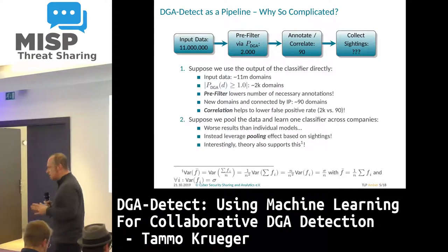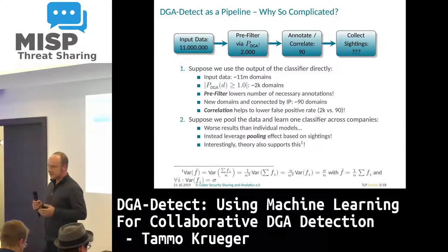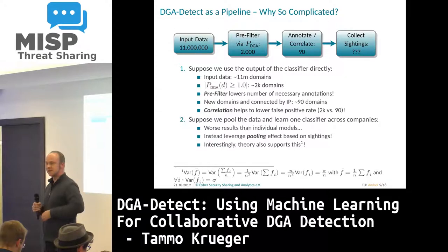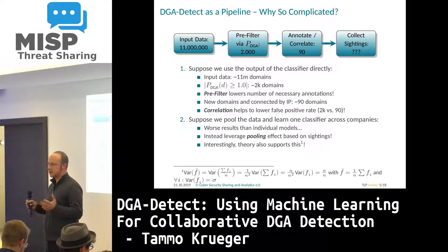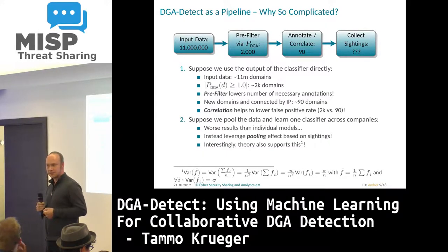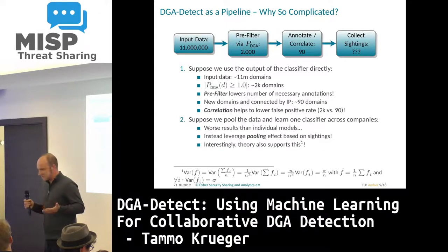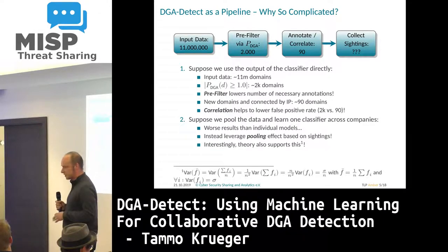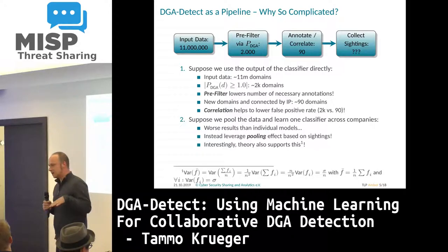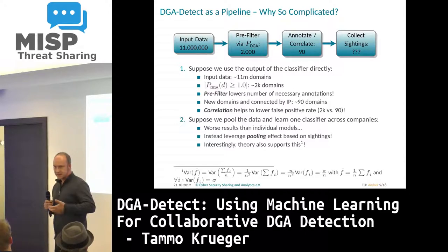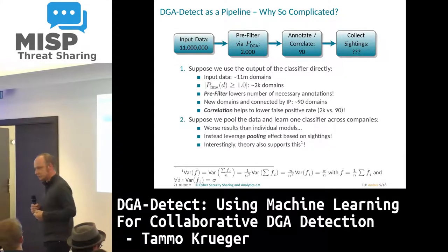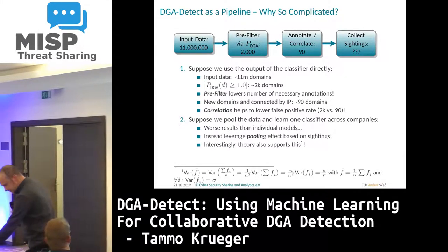You might ask: do we really need this MISP thing? Is this annotation useful? Can't we just take all the data from every company, build one big classifier, which is then perhaps super powerful and can do this on its own? I tried this — it's not working. The interesting thing is also supported by theory: by having multiple classifiers, we get better results in the end. We can boil down the variance of our predictions, which is kind of cool. Collaboration really helps.